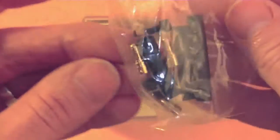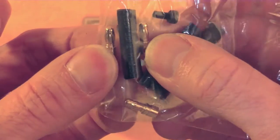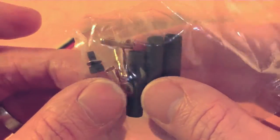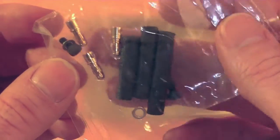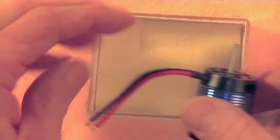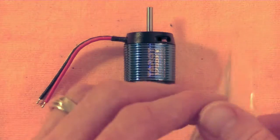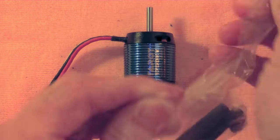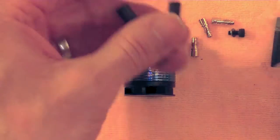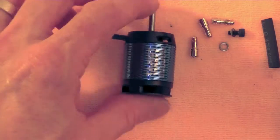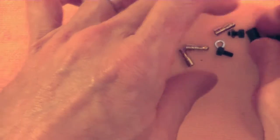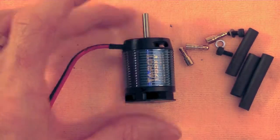Inside the package it does come with the bullet male bullet ends, some shrink tubing, and some screws and washers to hold the motor mount. Pretty simple, but really that's what you'd expect to find in a motor package. All the necessities, and that's really all you need right there. Two screws, two washers, three bullets, and three pieces of shrink tubing.